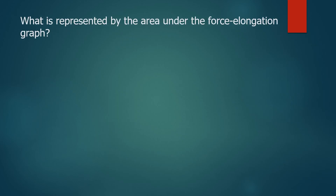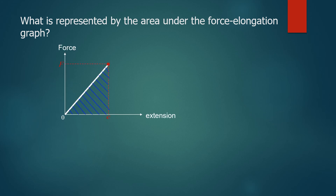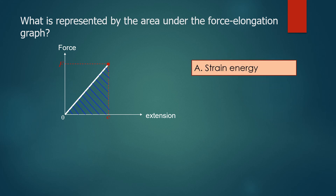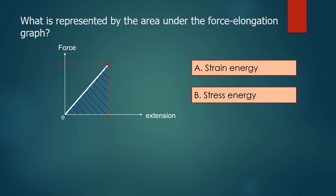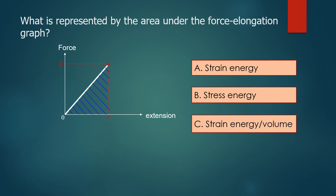Let's check our understanding. What is represented by the area under the force-elongation graph? A — strain energy. B — stress energy. C — strain energy per volume. The answer is A, strain energy.